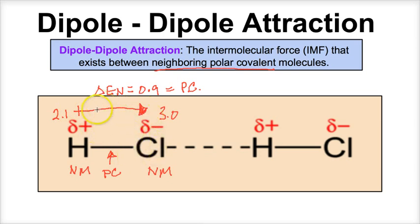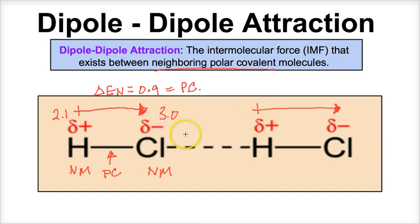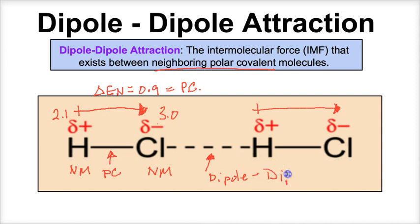This charge separation is called a dipole. When you get two polar covalent molecules next to one another, one has a partially positive charge and the other a partially negative charge, and positives and negatives attract one another. The result is called a dipole-dipole attraction — a force of attraction that occurs between these two polar covalent molecules. This is the second weakest of the three IMFs we're going to talk about today.